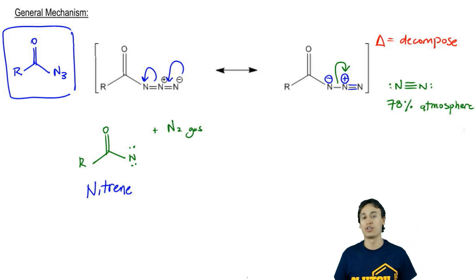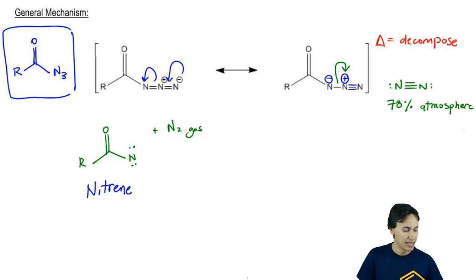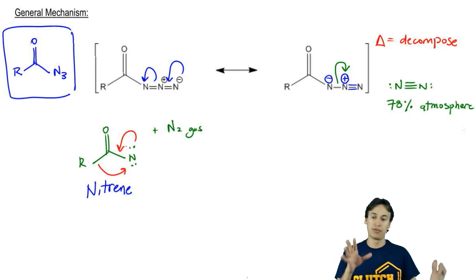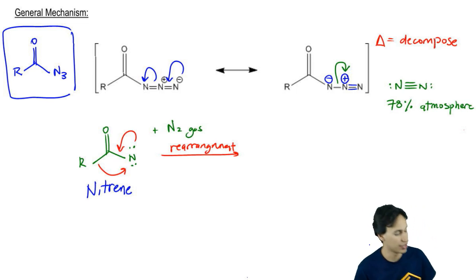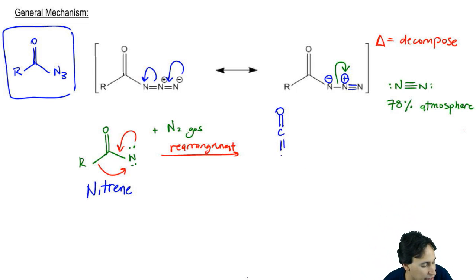It turns out, guys, this nitrene is going to want to rearrange. This is the Curtius rearrangement part. What we're going to get is that the R group, the electrons from the R group actually attach to the N, a lone pair comes down and forms a double bond. This is going to give us—this is just going to be our rearrangement. What we wind up getting is our isocyanate as a product. I'm going to have O double bond C, double bond N with now an R group coming off of it.